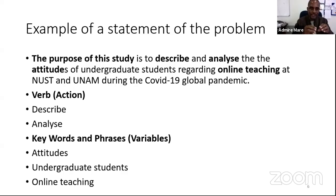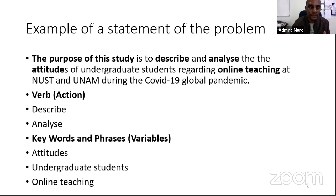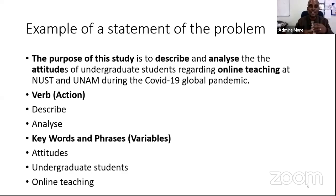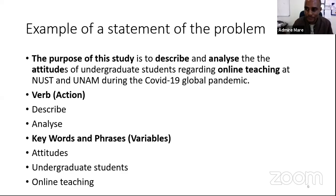The three things to think about: first, 'the purpose of this study is to'; second, the verbs — are you going to analyze, examine, evaluate, or document; and third, the keywords or phrases that accompany the intervention you want to undertake. Whenever you are thinking about a problem statement, think about this key sentence and ask yourself whether your study is speaking to these key things. If it is, it becomes easier for you to start operationalizing — to describe and analyze — which are very key in understanding how you actually do your research.